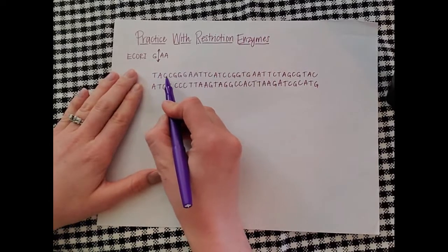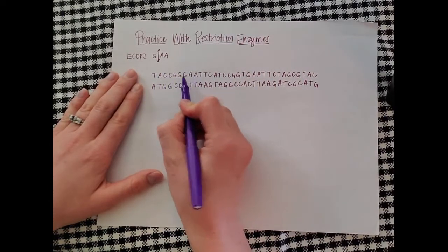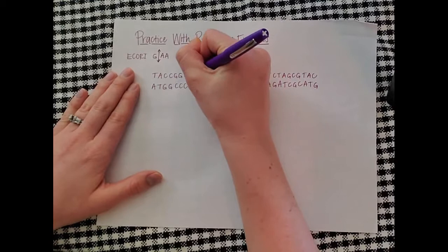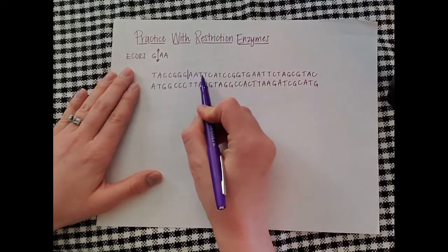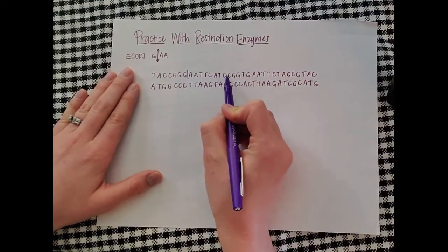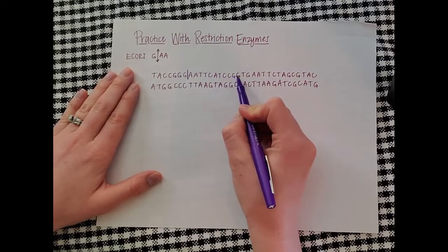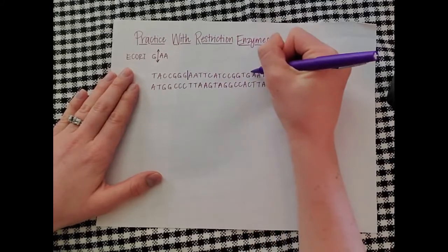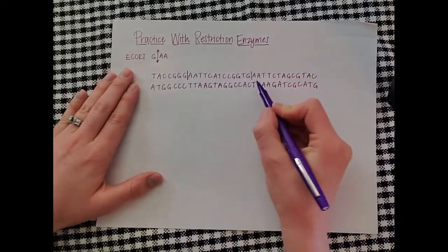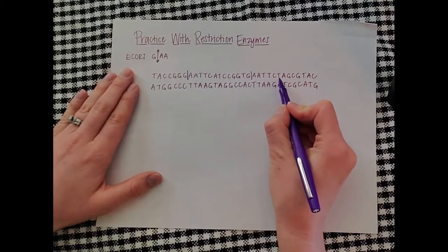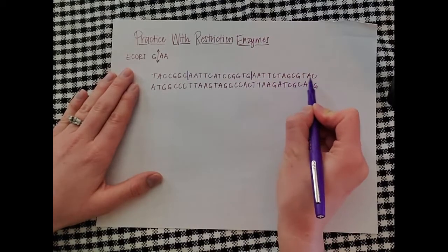We're going to skim across until we see GAA, which we see right here. So it's going to cut through here. We're going to keep doing the exact same thing all the way across. Here's GAA. We're going to cut between the G and the A. And that's it for that strand.